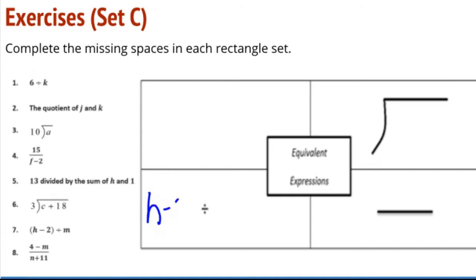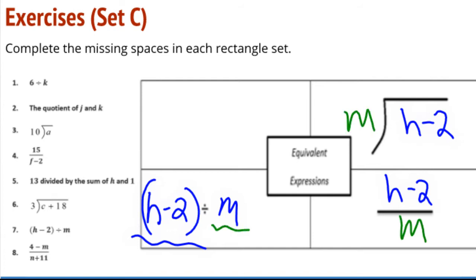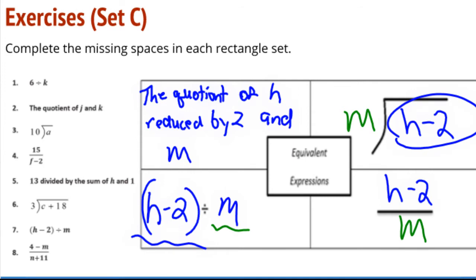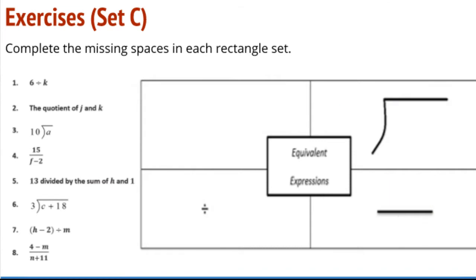And then how about looking at number 7 here. H minus 2 divided by M. And now I need to think about how to put this in words. The quotient of H reduced by 2 and M. Notice I'm trying to think of different ways to express the subtraction. We really need to be flexible in our thinking. We don't want to get locked into just one way of thinking of division or subtraction or addition or multiplication. There are so many ways to express them.